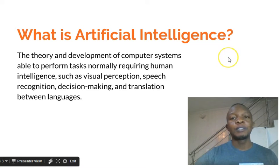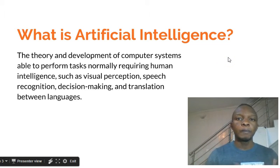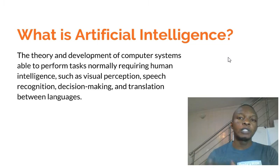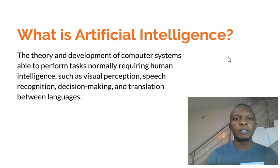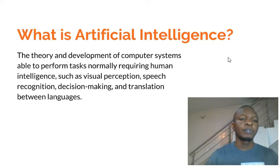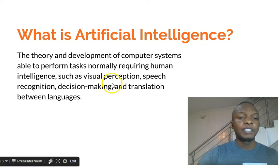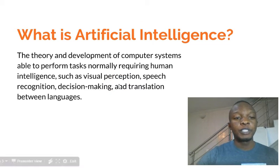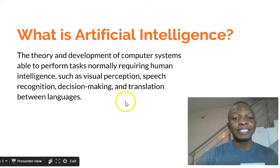So the next thing is: what actually is artificial intelligence? Machine learning is a subtopic under artificial intelligence. If you understand artificial intelligence, understanding machine learning will be easier. As you can see on the screen, machine learning is the theory and development of computer systems able to perform tasks normally requiring human intelligence.